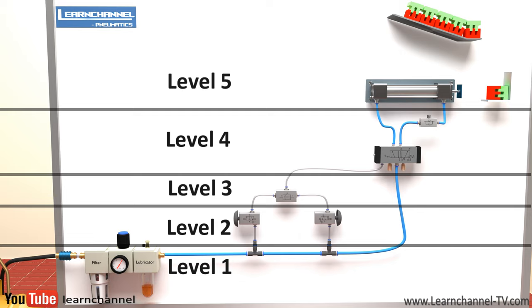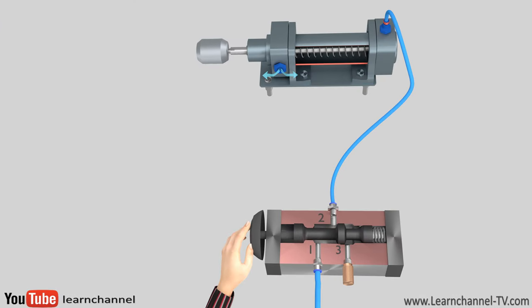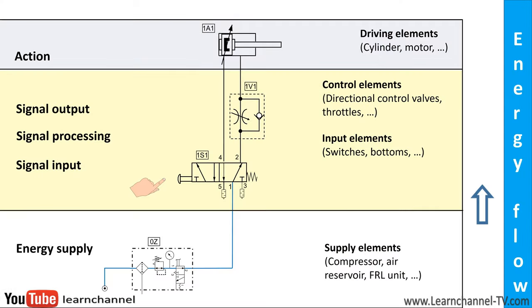Here you get the associated circuit diagram with its different levels. Note that the energy flow in the pneumatic circuit diagram runs from bottom to top, starting with the compressor and FRL unit and ending at the actuator. But note, within simple circuits, a pneumatic component may provide the function of multiple levels. Here, this manually operated 5x2 valve acts as an input element and final control element at the same time.